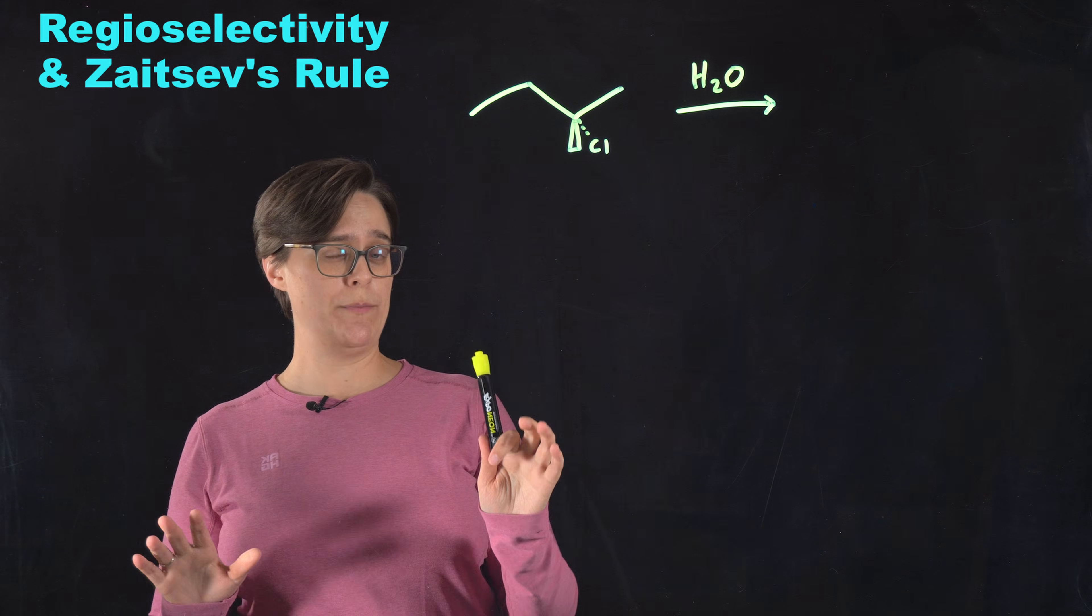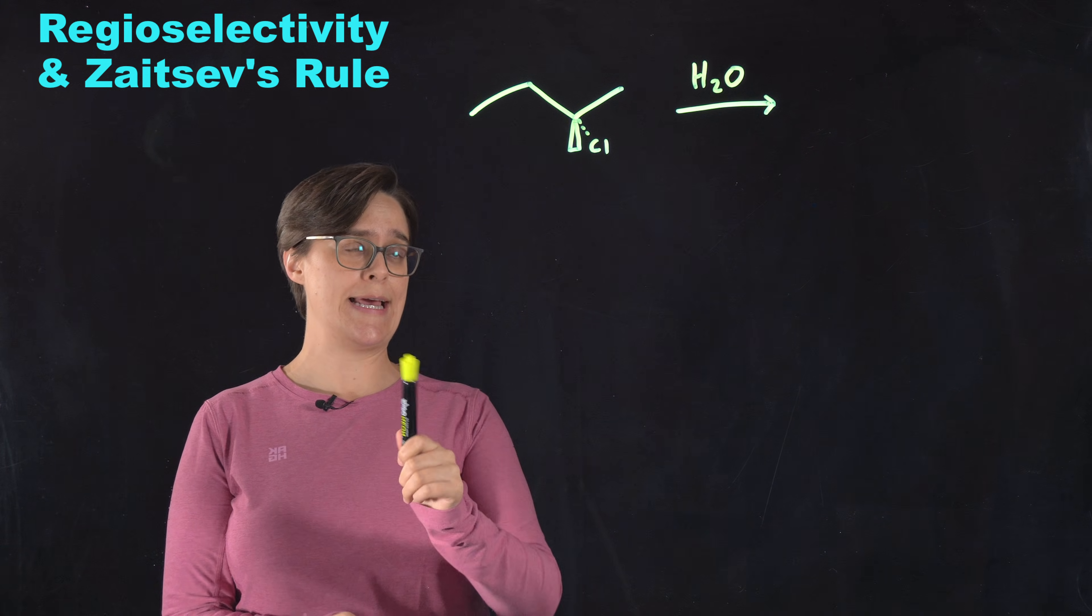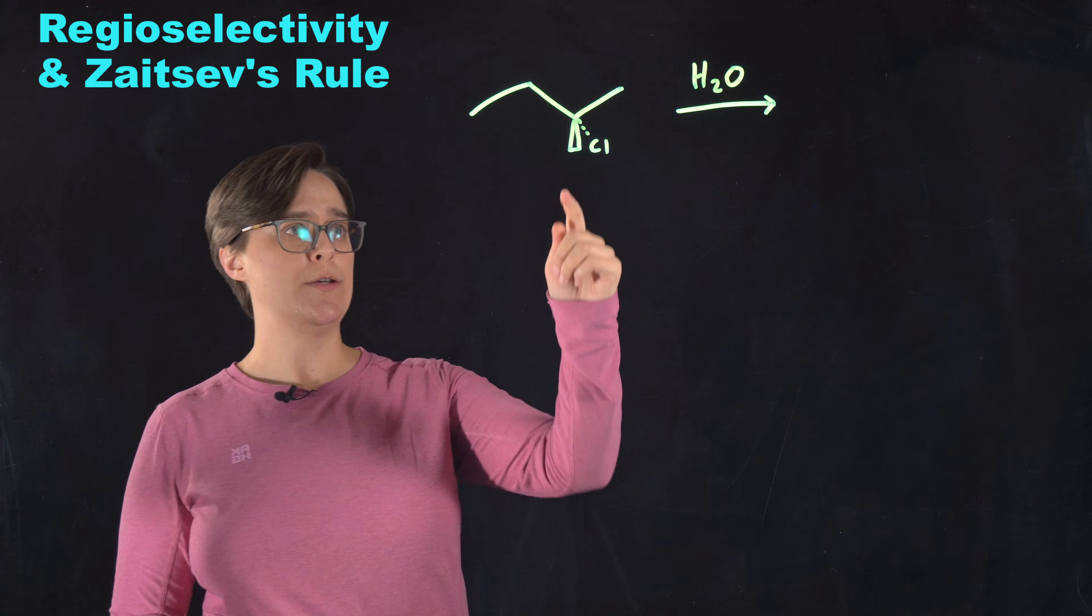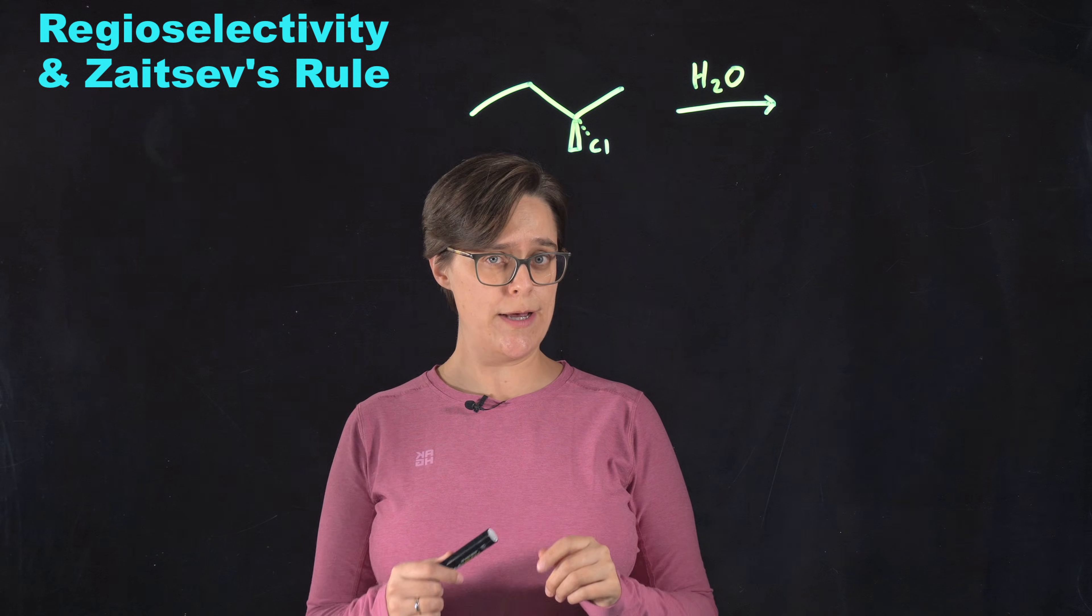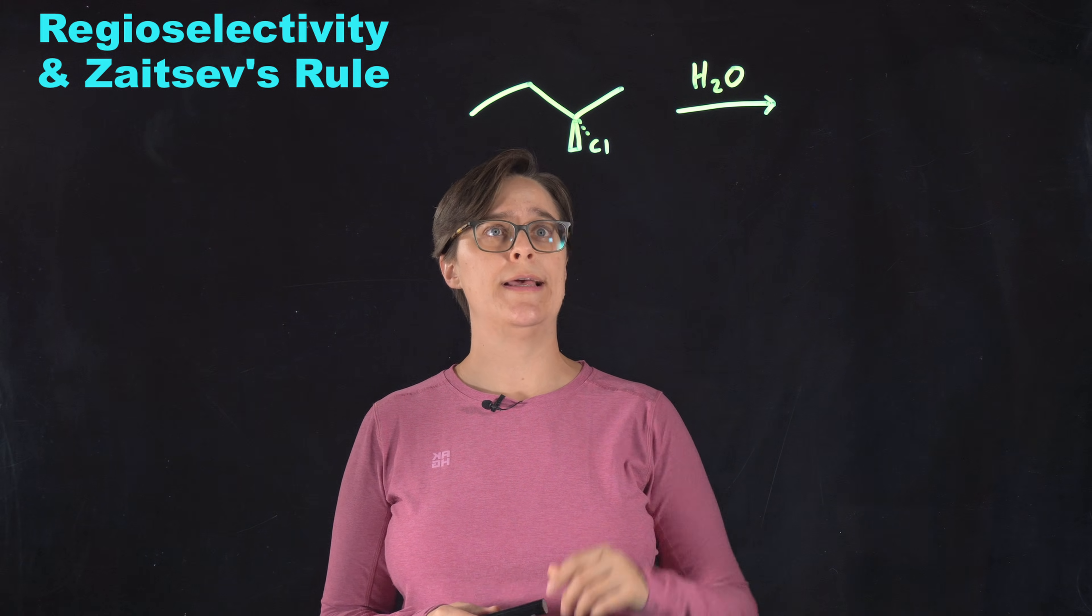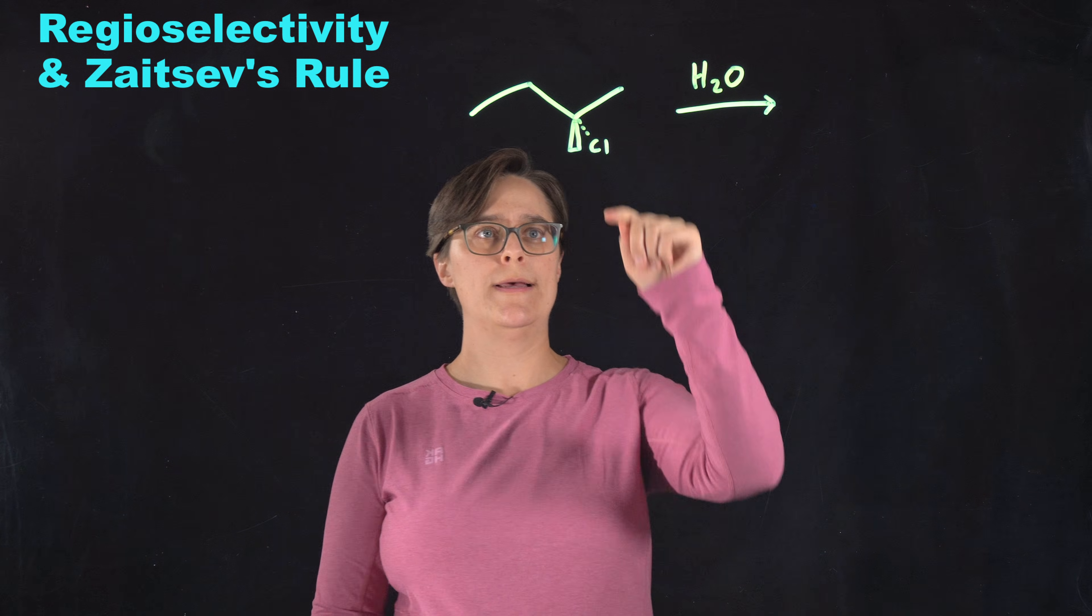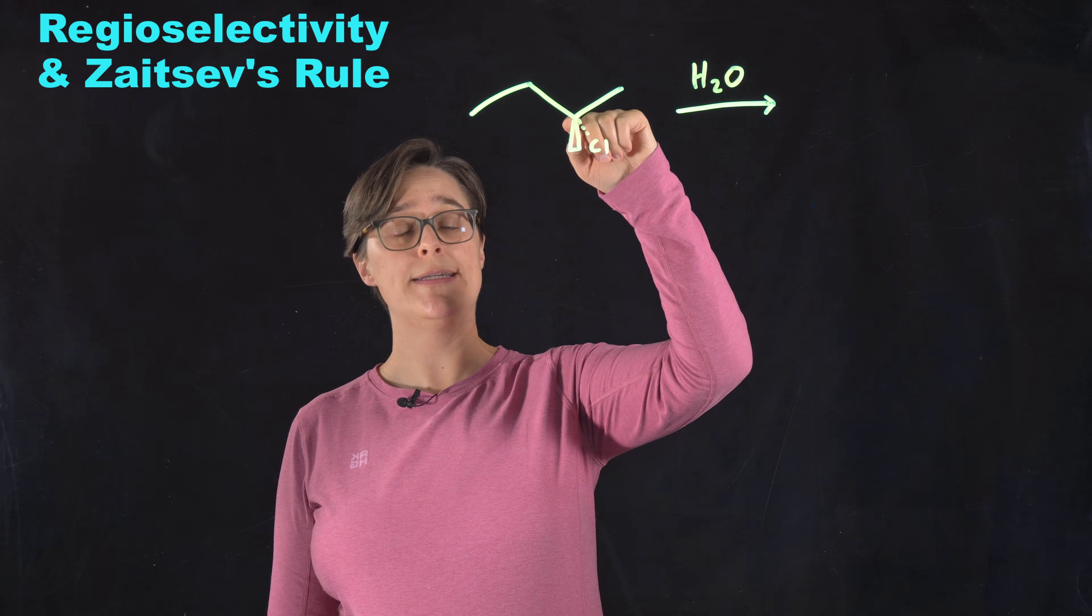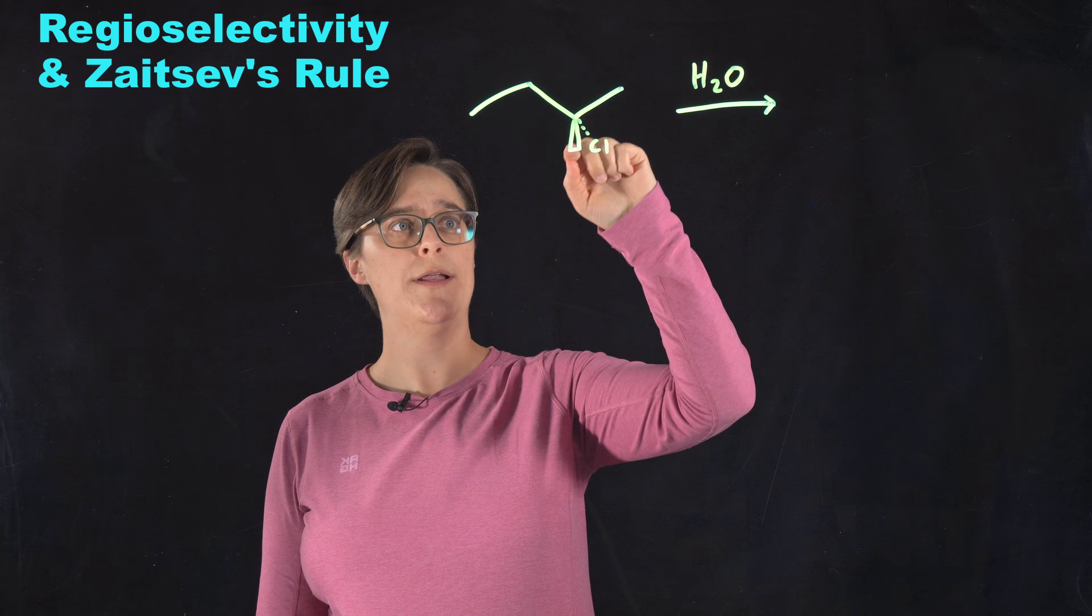So this example is a bit more complex because I want to teach you about regioselectivity and Zaitsev's rule. So this is 2-chloro-2-methylbutane. And when it undergoes an E1 reaction, there are two different products that are formed. So chlorine is our leaving group. That makes this our alpha carbon. And we have three beta carbons—one, two, three.